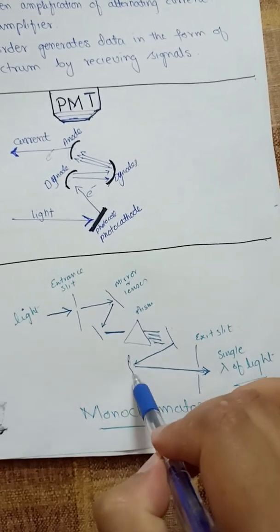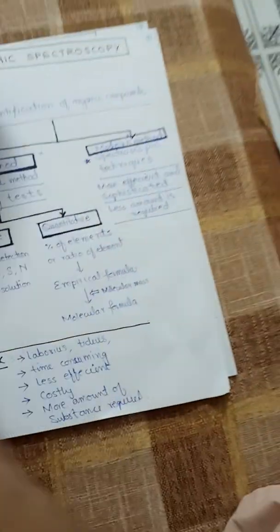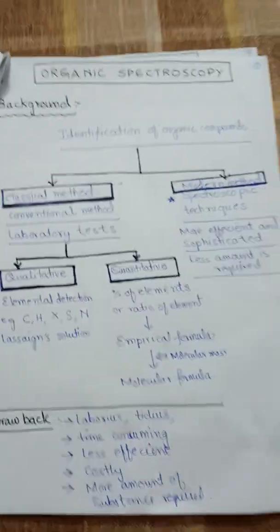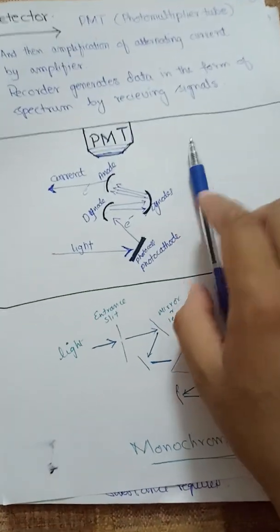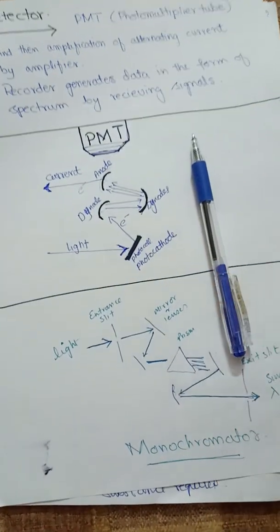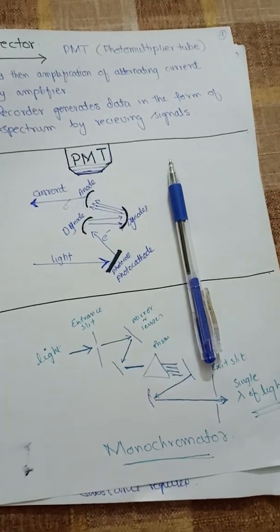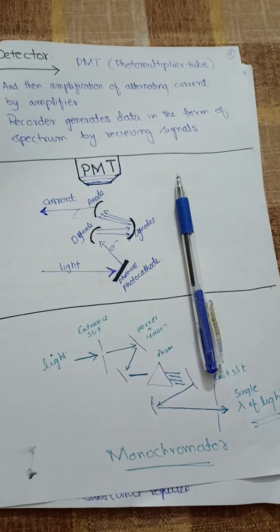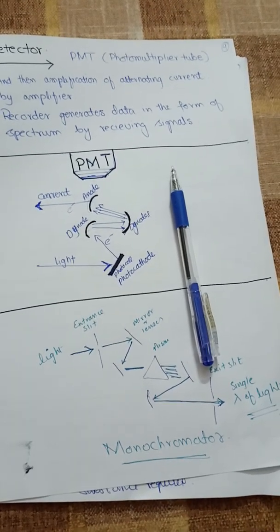That concludes today's coverage of UV-visible spectroscopy. In our next lecture, we will continue with the different chromophores and auxochromes present in molecules, how they provide different signals, and Woodward's rules.